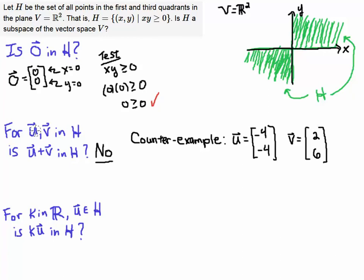However, let's take a look and see if U plus V is in H for any U or V in H. I actually claim that the answer to this is no, and I can find a counterexample. What if you have the vector U, which is (-4, 4). Now, (-4, 4) is somewhere in this quadrant, certainly, and (2, 6) is in this quadrant, certainly.